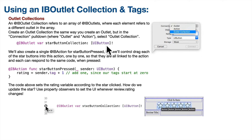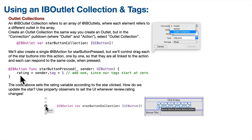Then we'll create an IB action called star button pressed and attach it to each of the buttons in our star button collection, so the action will run if any of those star buttons are pressed. Our star buttons also have a tag property — we set these zero to four when we set up our user interface in a previous video. So in the IB action, we'll simply set the new rating property to the tag of the sender, or the button that was clicked, plus one. This gives us a rating from one to five depending on the button pressed.